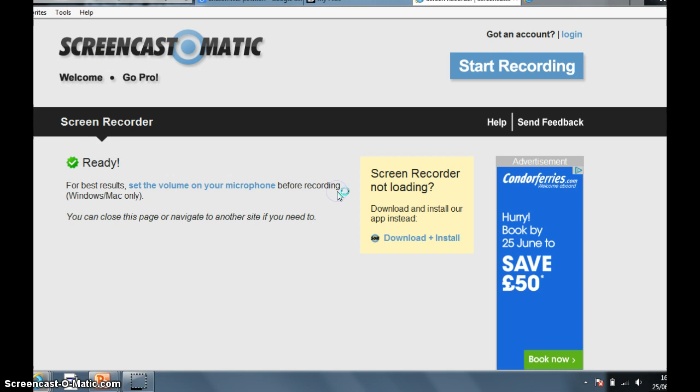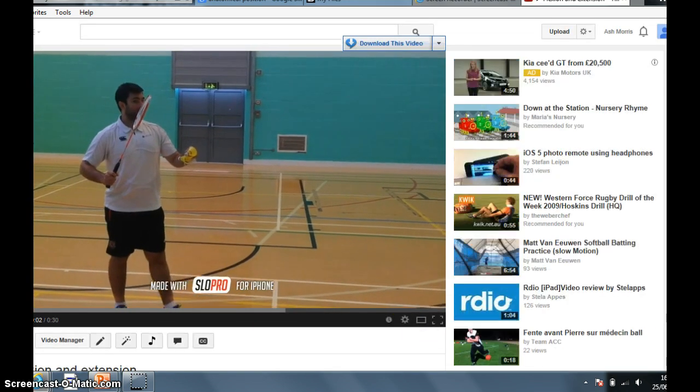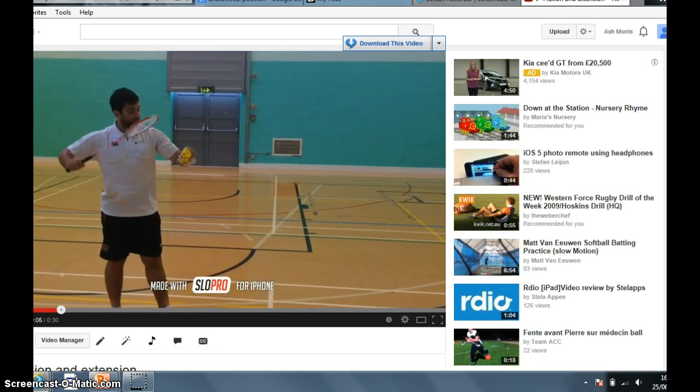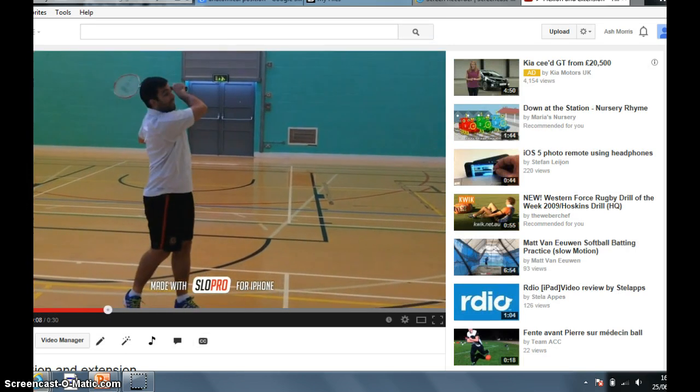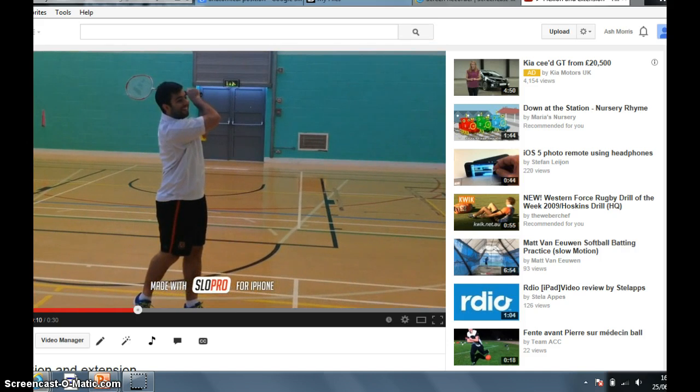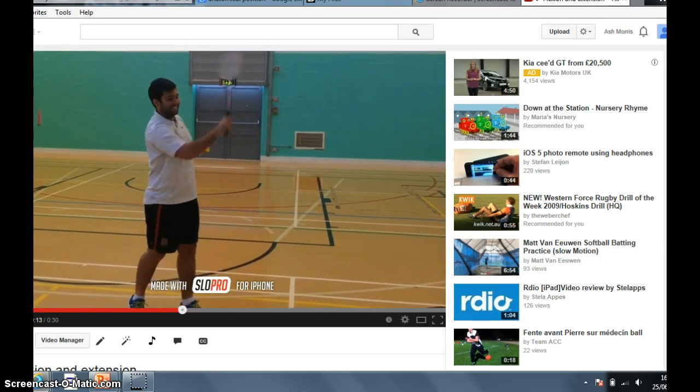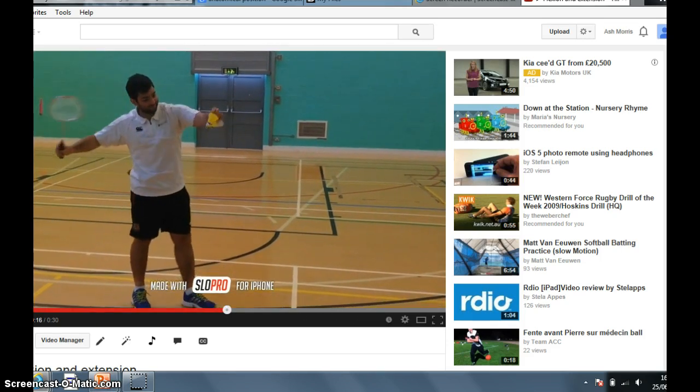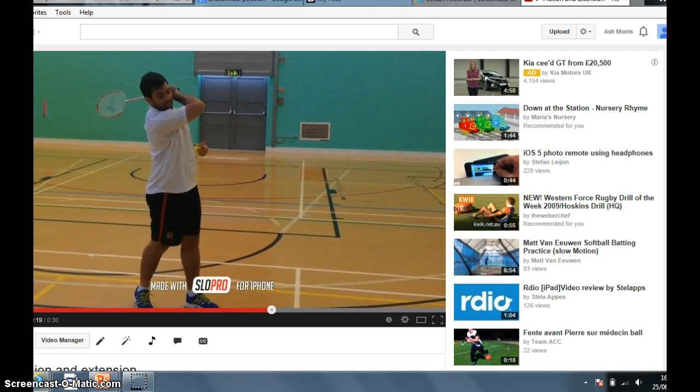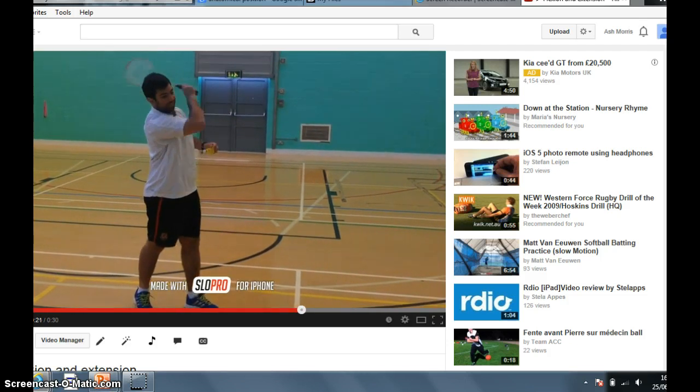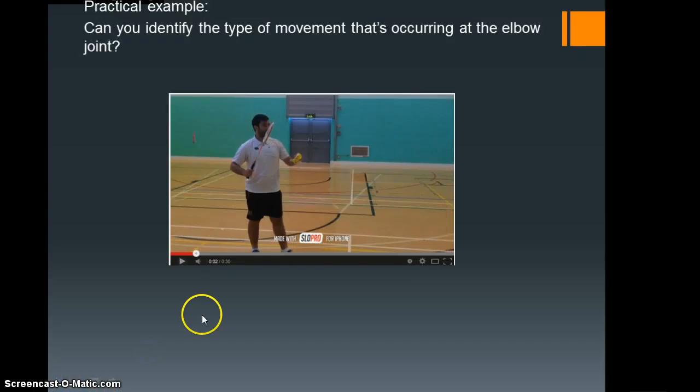Let's have a look at this very quick video here. What I want you to do then is identify what's actually happening at the elbow. So is there a flexion or is there an extension? Look at the elbow. Okay, so hopefully what you'd have identified is that as he draws the racket back there is an extension, but then as he draws the racket forwards there is a flexion at the elbow. And that's principally what we're looking at.